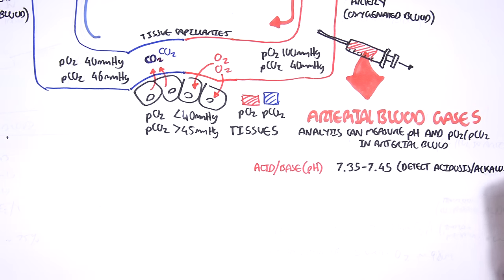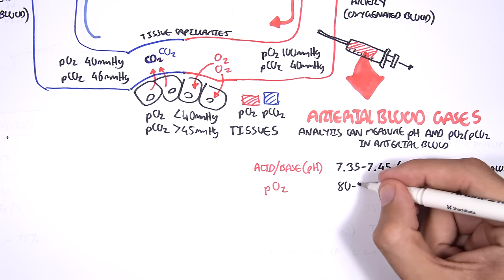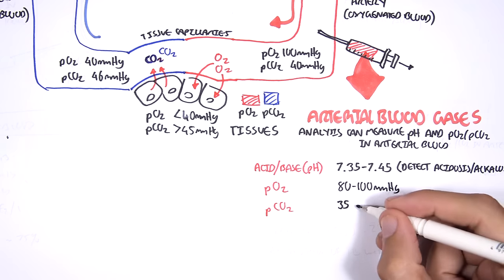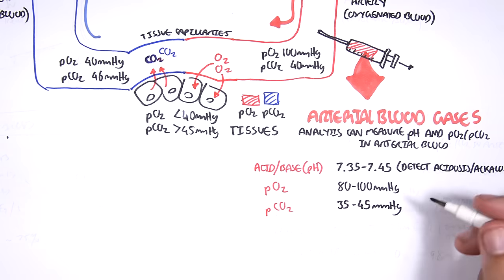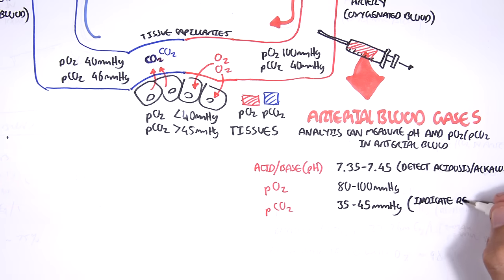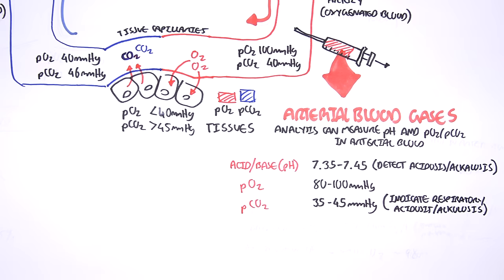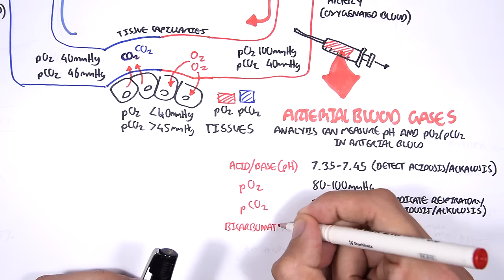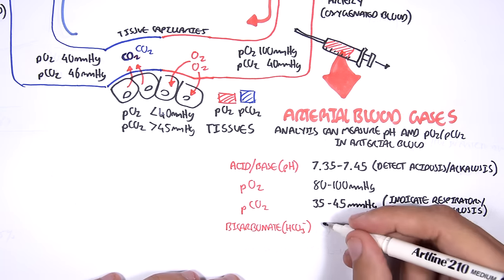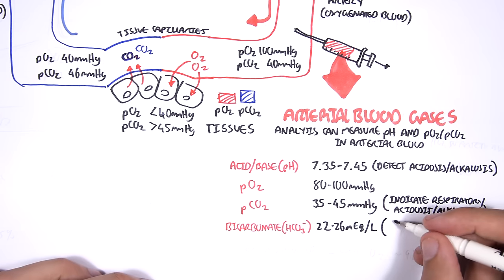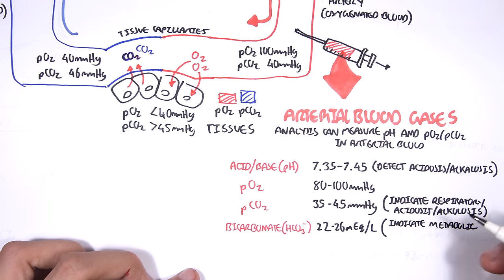Changes in pH can result in acidosis or alkalosis. Arterial blood gas can also tell us the partial pressure of oxygen, which is normally 80 to 100 mmHg — if it's below 80 this indicates cyanosis. The partial pressure of carbon dioxide is normally between 35 and 45 mmHg, and changes can indicate respiratory acidosis or alkalosis. Bicarbonate (HCO3-) is normally 22 to 26 milliequivalents per liter, and changes can indicate metabolic acidosis or alkalosis.